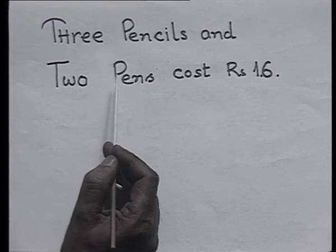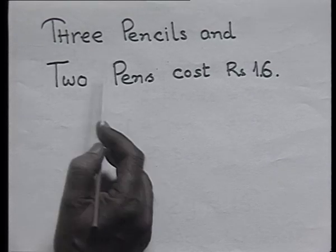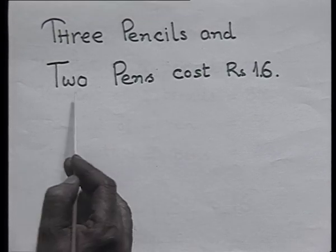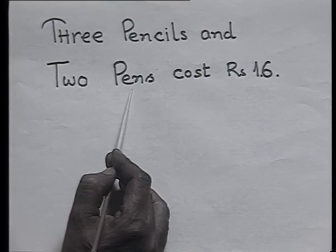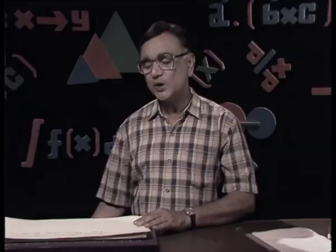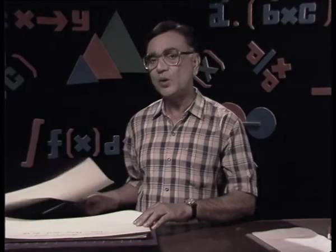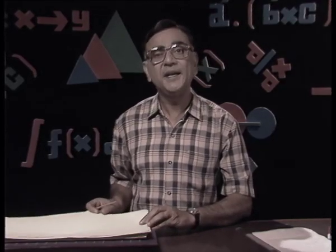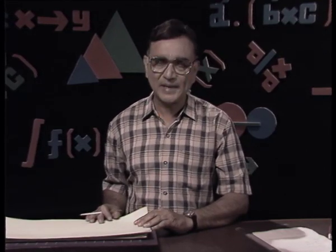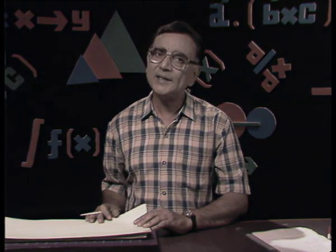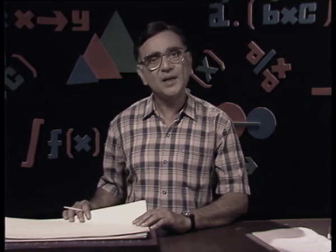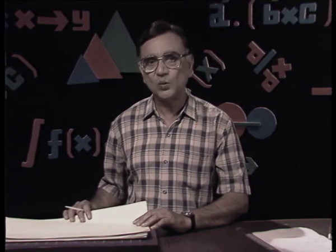In this question there are 3 pencils whose cost is not known to me, and 2 pens whose cost is also not known. So what should I do? I will suppose the cost of the pencil and that of the pen. Let us see how we frame a linear equation with that.